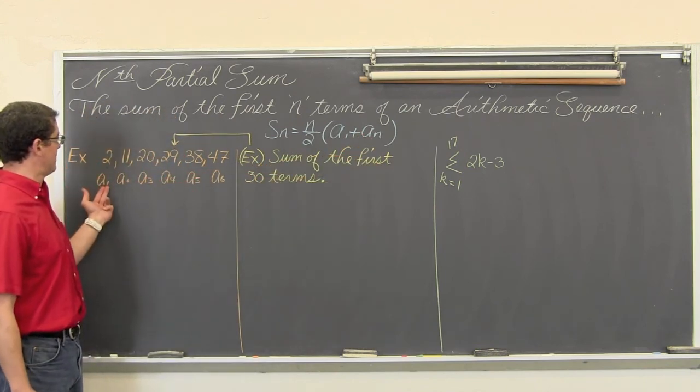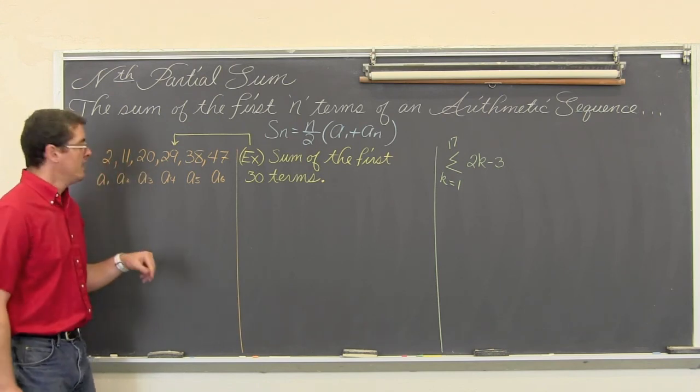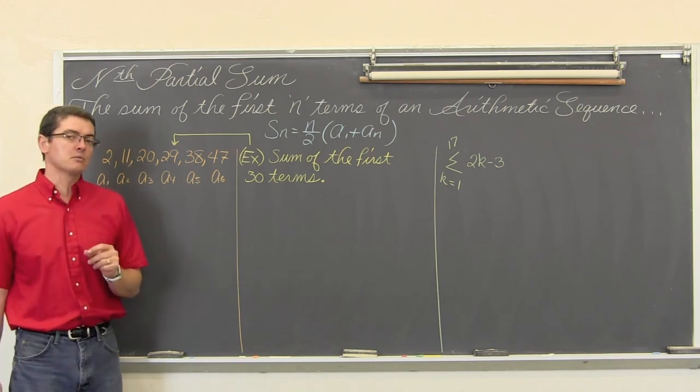So a sub 1 is 2, a sub 2 is equal to 11, a sub 3 is equal to 20. That is when n equals 1, n equals 2, and n equals 3.